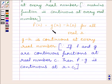Now, we know g(x) minus h(x) equals f(x). So, this implies function f is continuous at every real number.